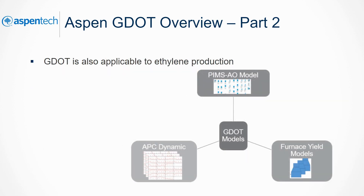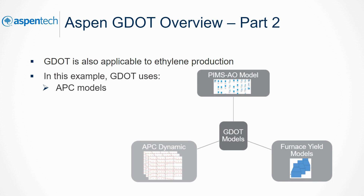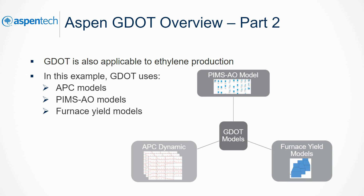Along with refinery applications, GDOT can also be applied to ethylene production. In this example, GDOT is using models from APC controllers, a PIMS-AO planning model, and SPIRO furnace yield models. The schematic shows a data flow between the DCS, APC, and GDOT.